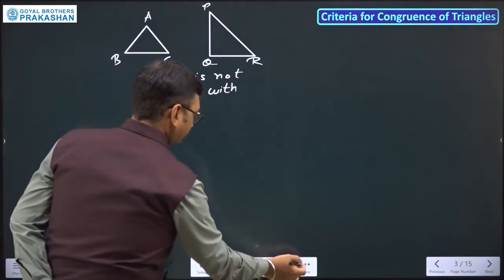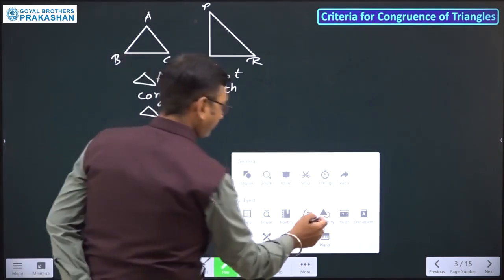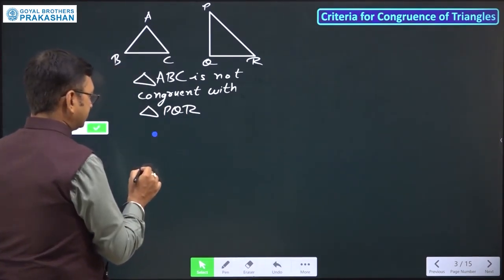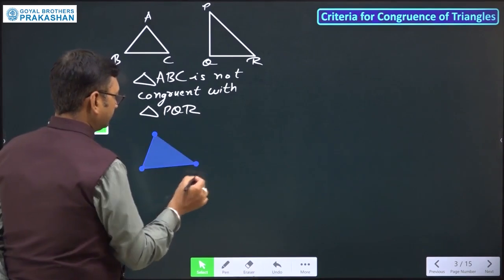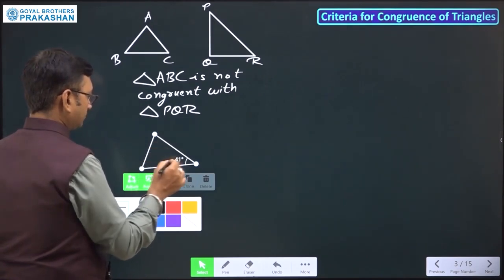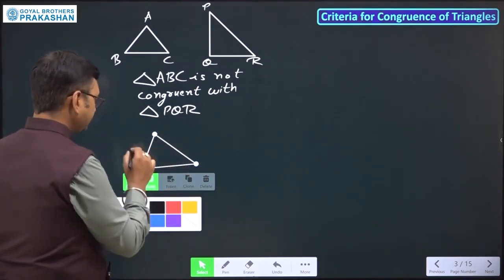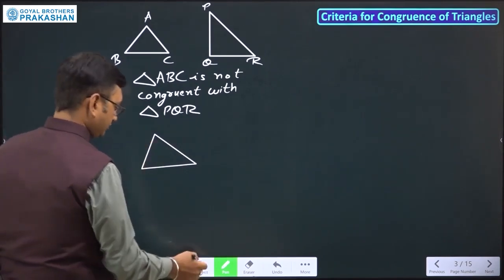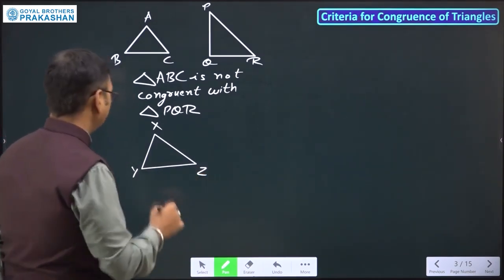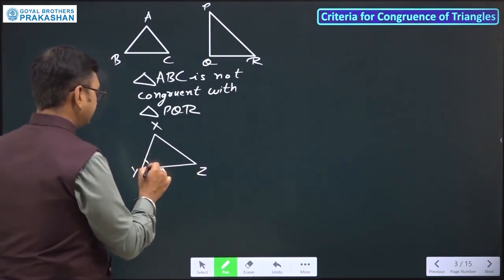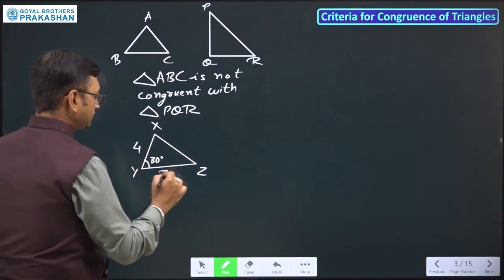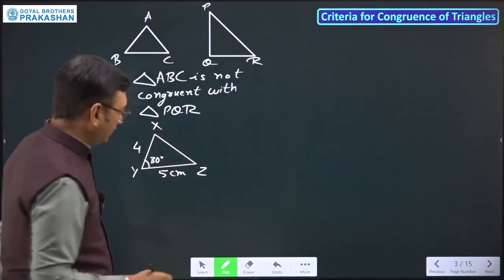Let me take one more example. Let me take one point, second point, third point. Now let's say this is triangle X, Y, Z. This angle is 30 degrees, this side is 4 centimeters, and this one is 5 centimeters.